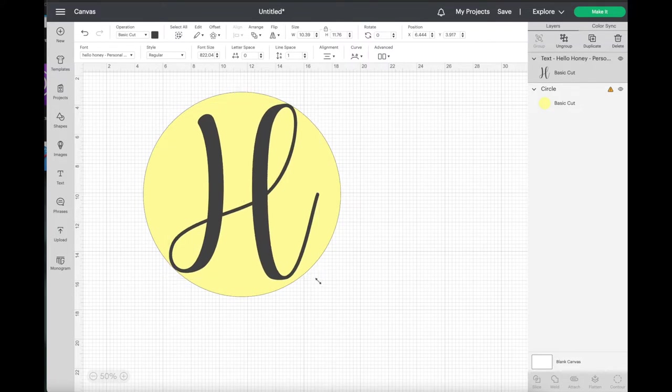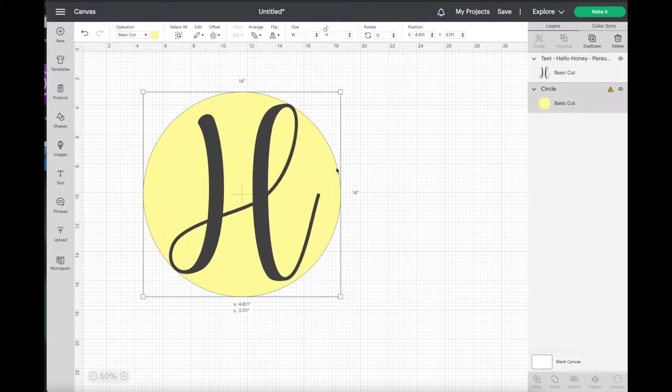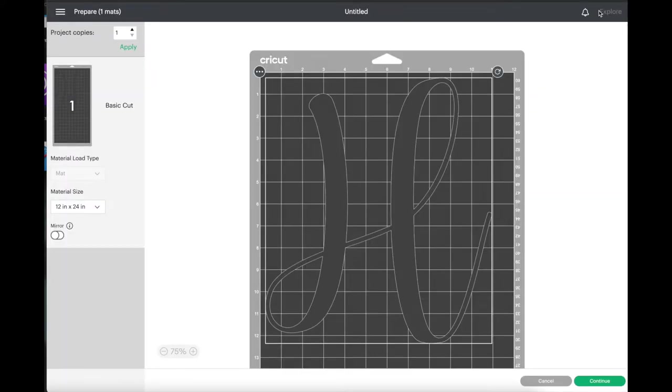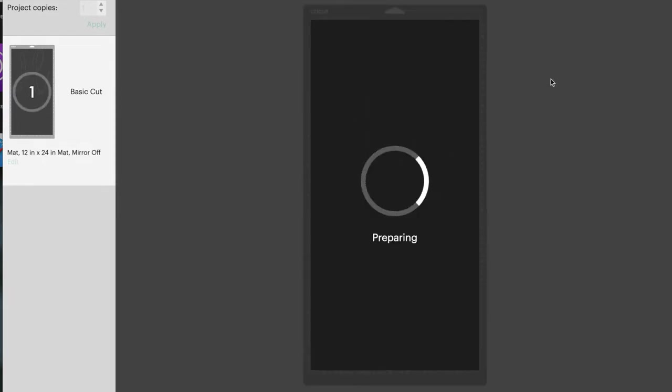Once the image is how you like it you click on the shape and you delete that and then click on the green make it button in the top right corner. Now it's time to load your material, and because of the size of my image I loaded my vinyl onto a 12 by 24 mat. I'm using removable vinyl that I had left over from another project because I'm using this as a stencil.